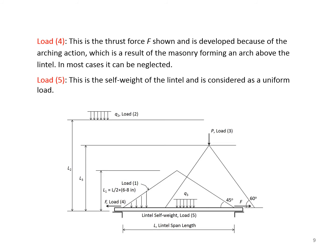Load four and load five are highlighted here. Load four is a thrust force F and is developed because of the arching action, which is a result of the masonry forming an arch above the wall. In most cases, it can be neglected. Load five is the self-weight of the lintel considered as a uniformly distributed load.